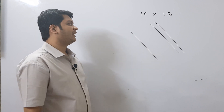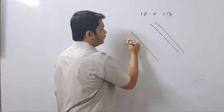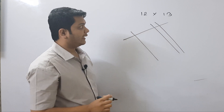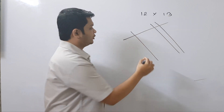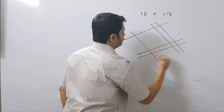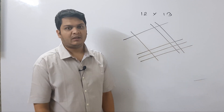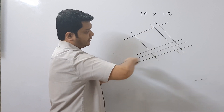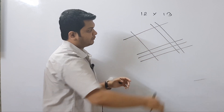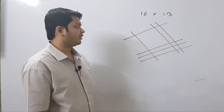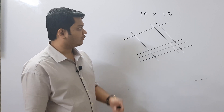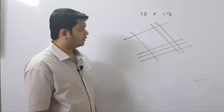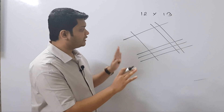Now coming to 13. At first for 1, we will draw one line here, and for 3 we will draw three lines here. You can start either way — diagonally from any direction you feel comfortable with. Now for the second part, we will group these straight lines.